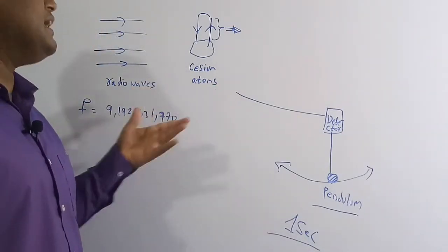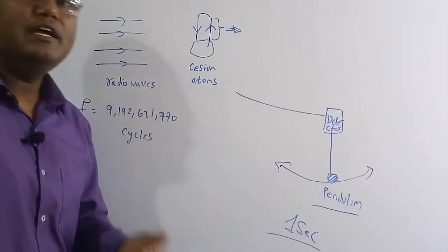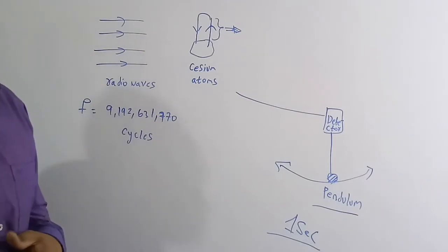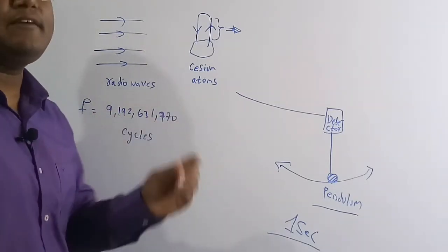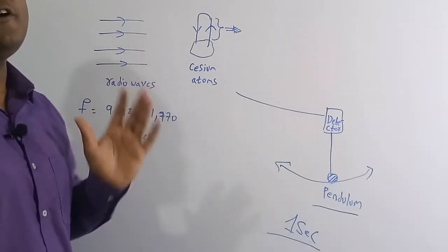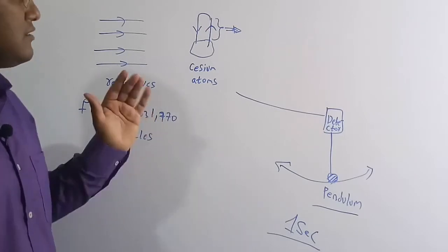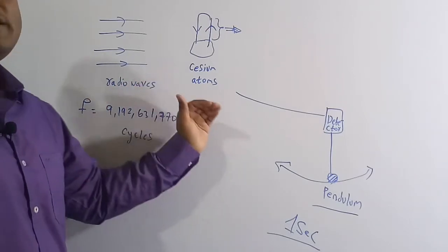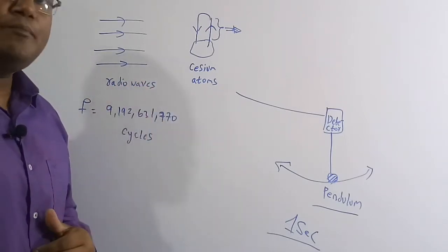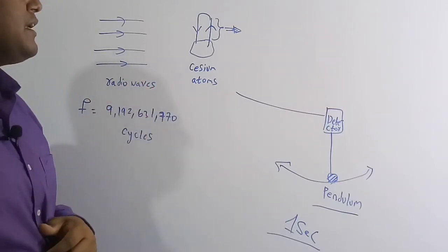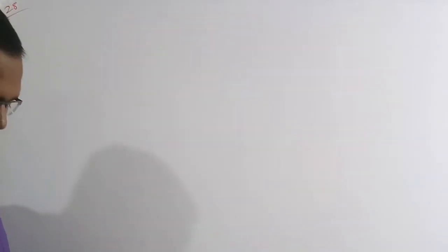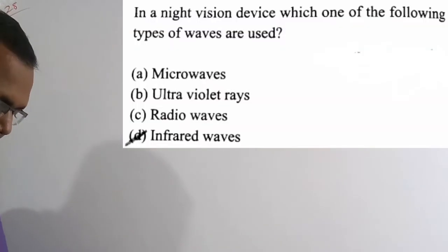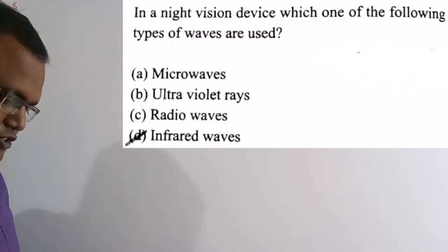Other atoms may have different variations depending on where they are used, but cesium atoms always have a fixed time period of transition. That is why cesium atoms are preferred over other elements for atomic clocks.